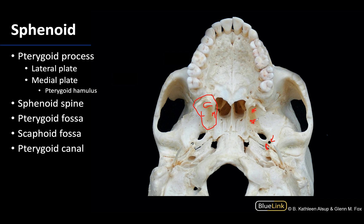Last but not least for this slide, let's locate the pterygoid canal. If you go back to finding those pterygoid plates and head posteriorly in between the two plates, it's going to be right around this region. What's more important than identifying that small area is understanding that the nerve of the pterygoid canal, which is heading for the pterygopalatine ganglion, will traverse that region. The pterygopalatine ganglion is one of the peripheral parasympathetic ganglia.